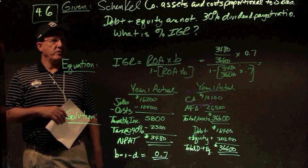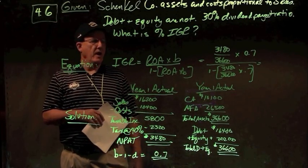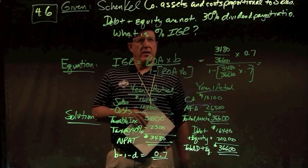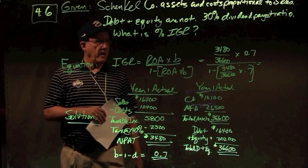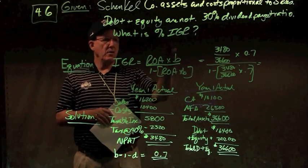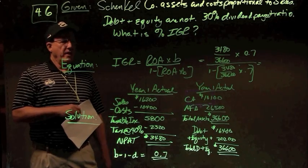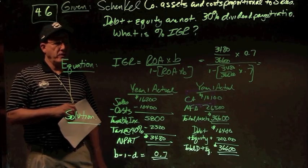In problem number six, we have given that assets and cost are proportional to sales, debt and equity are not. 30% dividend payout ratio, which means they have a 70% B or retention ratio. What is their IGR, internal growth rate, the rate at which I can grow my sales, cost, assets without any plug whatsoever.